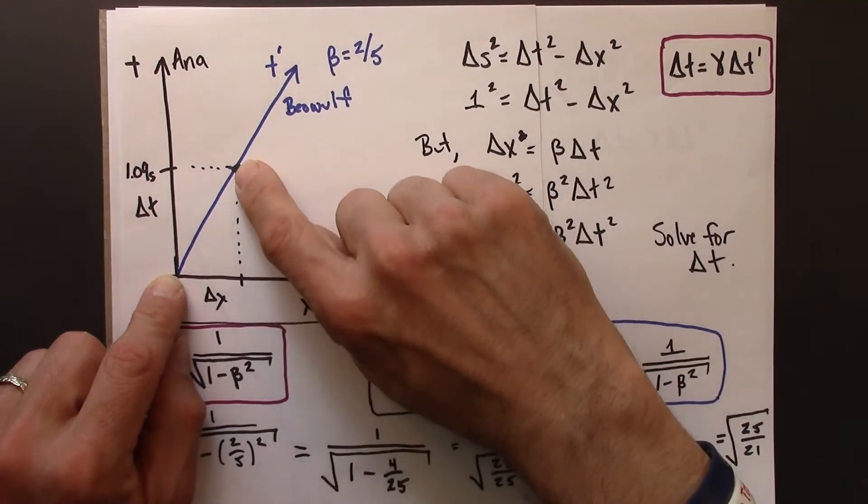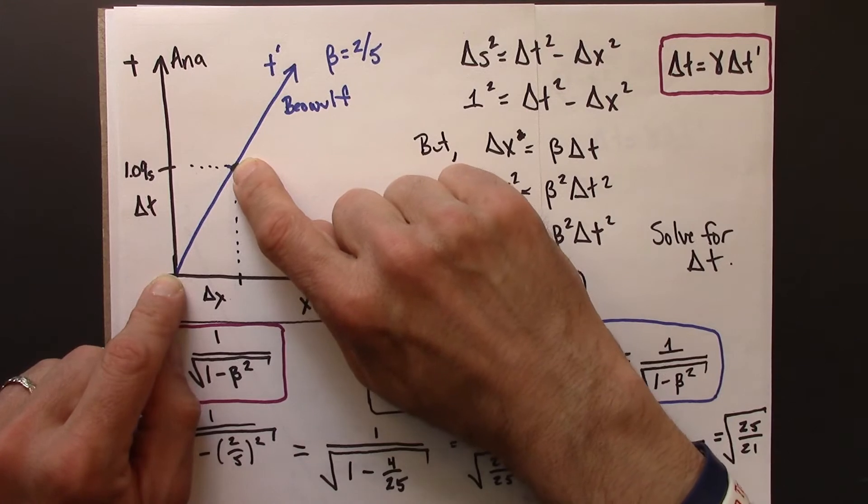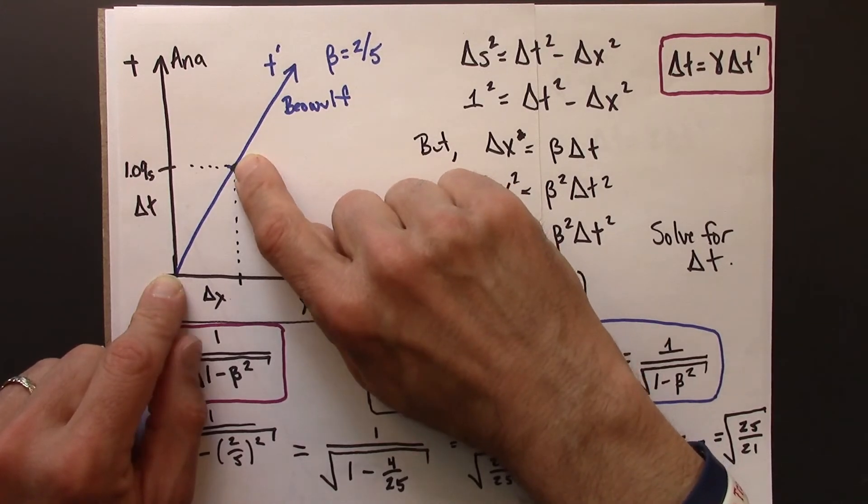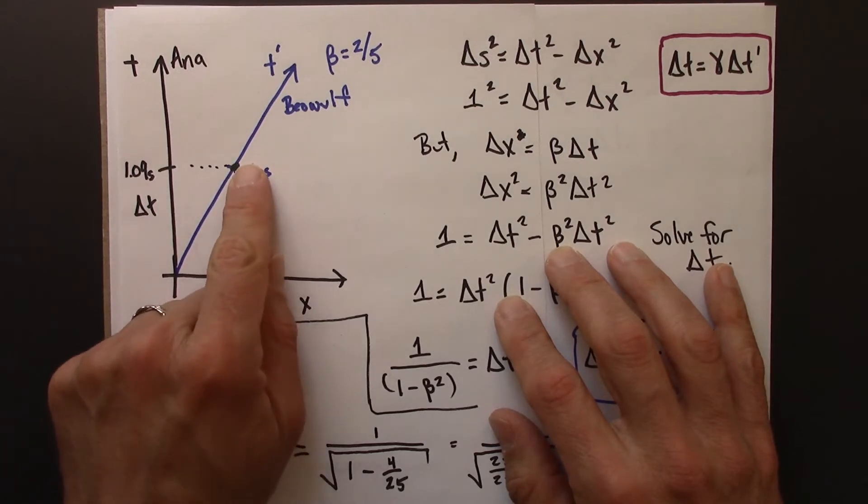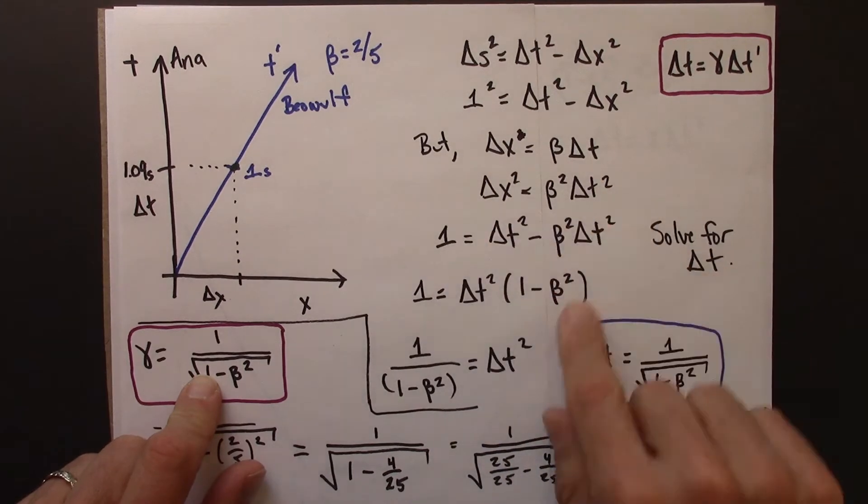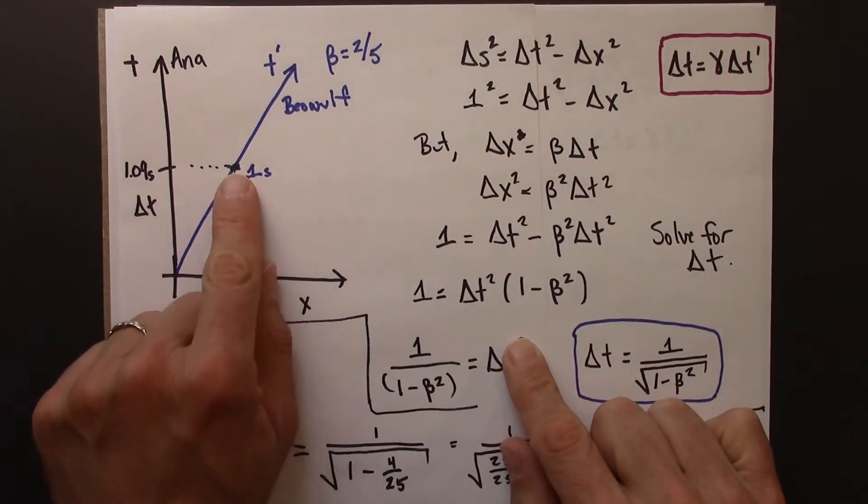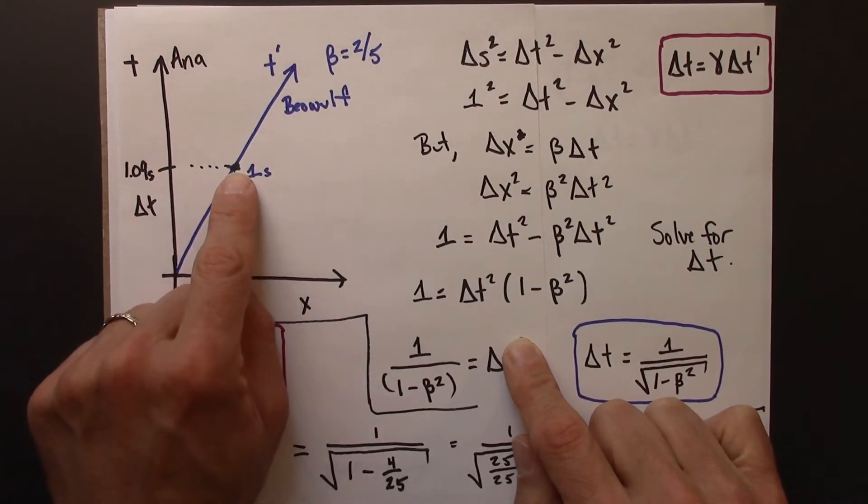So when Beowulf measures one second, so that's when his clock, the clock that he's carrying with him at his origin, measures one second, what would the space-time coordinates be for that event, according to Anna? And so, this is the work we did to get there. And we said, you know, actually Anna's going to see that at 1.09 seconds, not at one second.